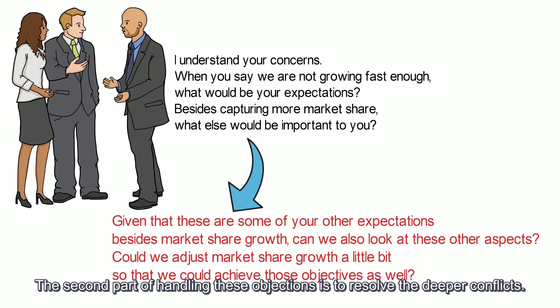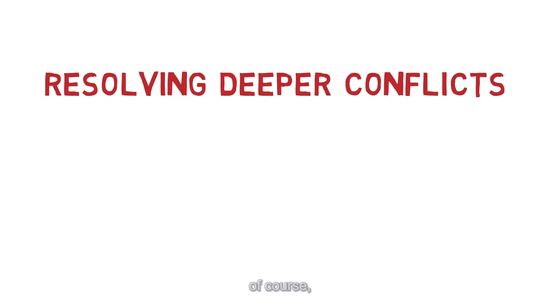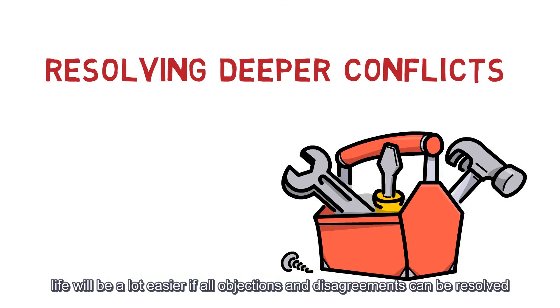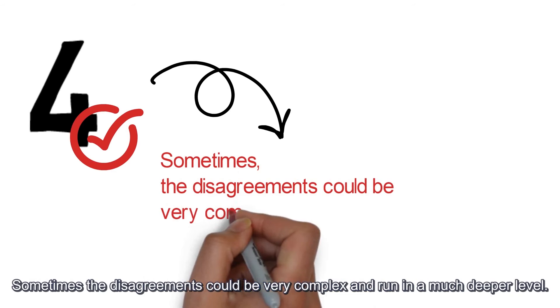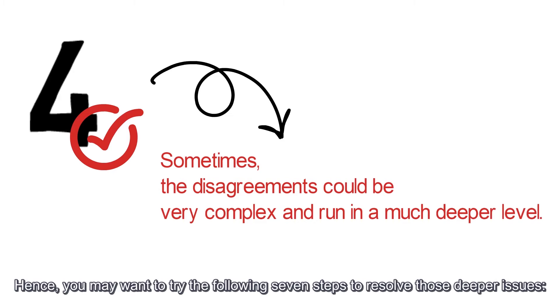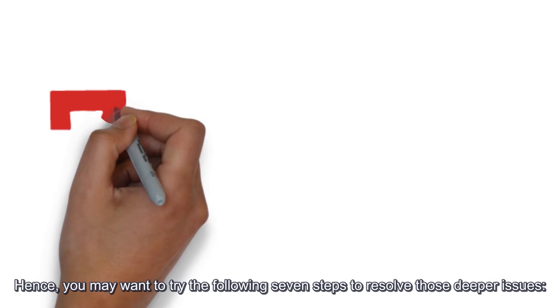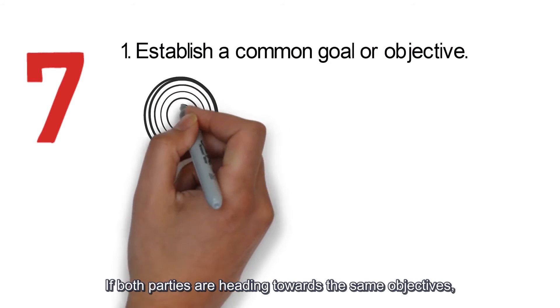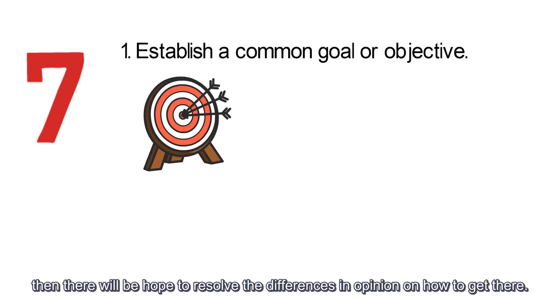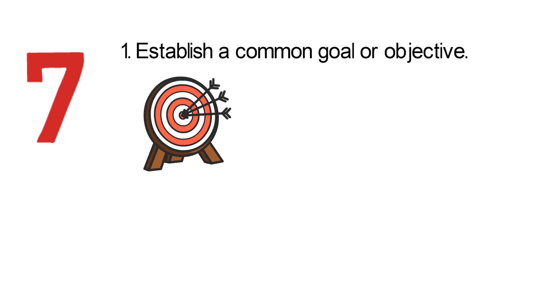The second part on handling these objections is to resolve the deeper conflicts. Life will be a lot easier if all objections and disagreements can be resolved using those simple four steps mentioned above. Sometimes the disagreements could be very complex and run at a much deeper level. Hence, you may want to try the following seven steps to resolve those deeper issues. The first step, establish a common goal or objective. If both parties are heading towards the same objectives, then there will be hope to resolve the differences in opinion on how to get there.